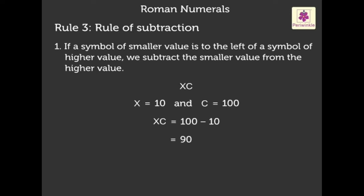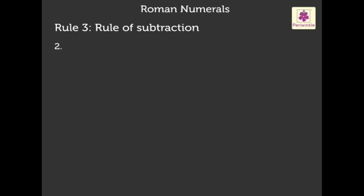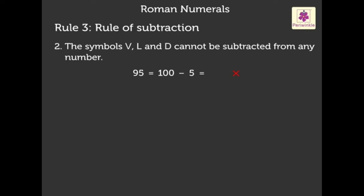Next: the symbols V, L, and D cannot be subtracted from any number. For example, we cannot write 95 as 100 minus 5 in Roman numerals. If we write VC, it will be wrong. 95 will be written as 90 plus 5, which is XCV.